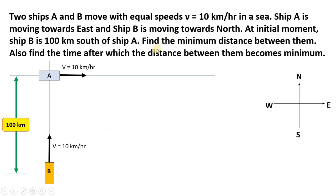Here is the diagram and the question along with navigation directions east, west, north and south. Two ships A and B move with equal speeds V equal to 10 km per hour in a sea. Ship A is moving towards east and ship B is moving towards north with the same speed. At the initial moment, ship B is 100 km south of ship A. We need to find the minimum distance between them and the time after which the distance becomes minimum.